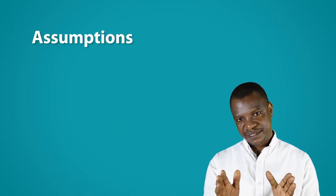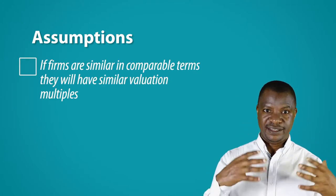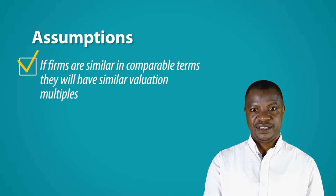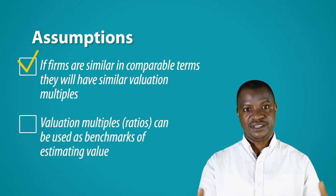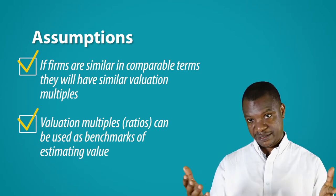We will state the main assumption in relative valuation as a foundation for understanding the estimation rationale. What is the main assumption here? The main assumption is that if firms are similar in comparable terms, they will have similar valuation multiples. Therefore, several sets of valuation multiples, known as ratios, can be used as benchmarks for estimating value.